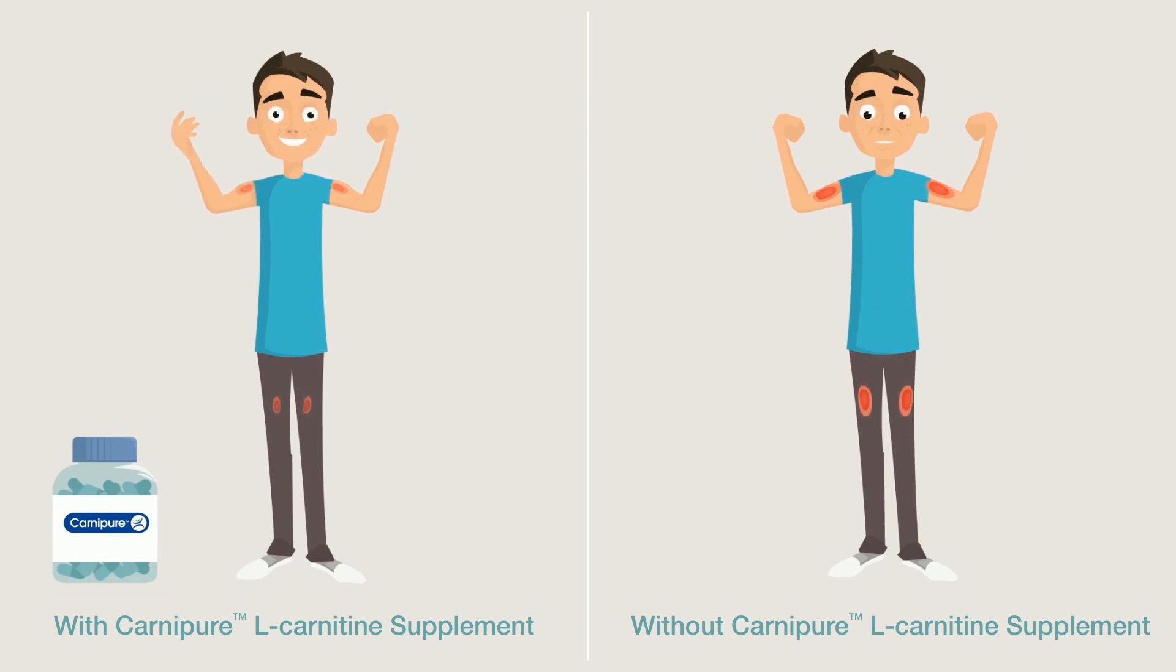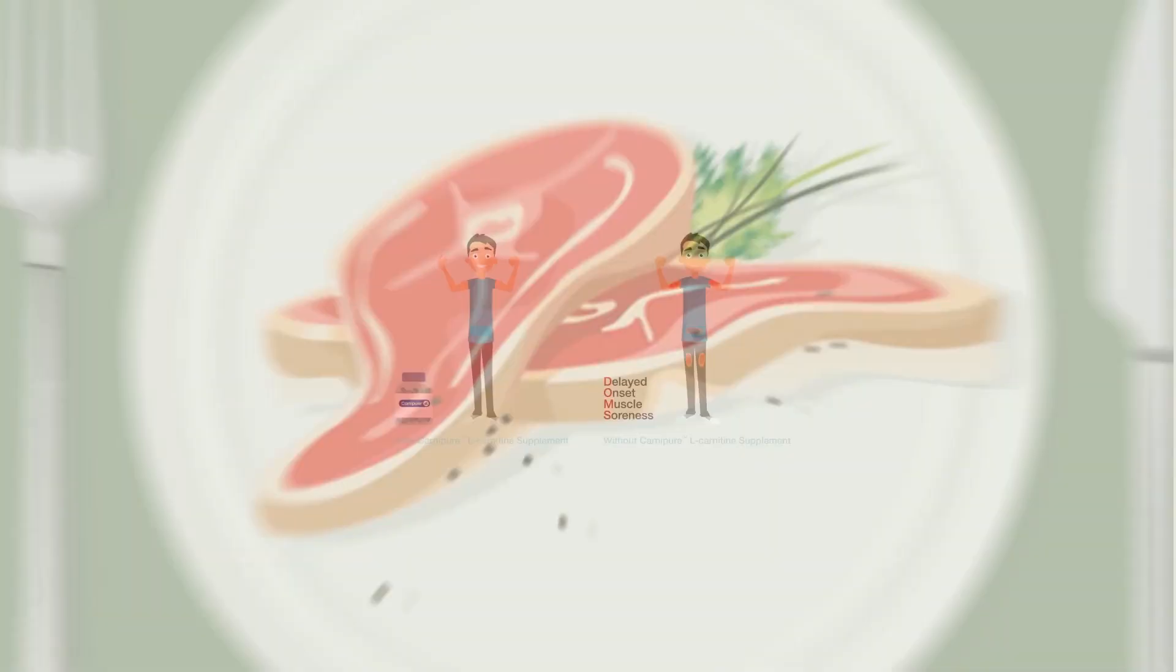Carnipur L-Carnitine has been shown to help prevent soreness after exercise, also known as DOMS, delayed-onset muscle soreness.